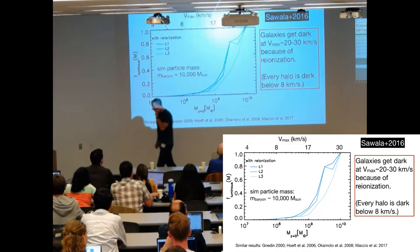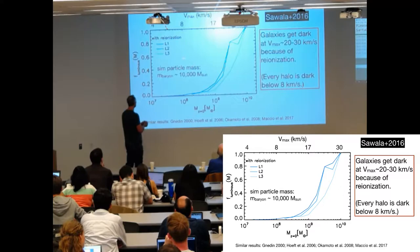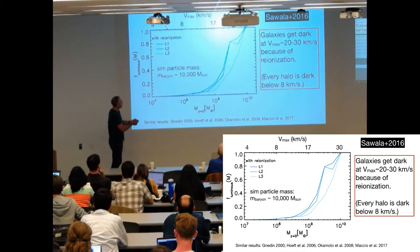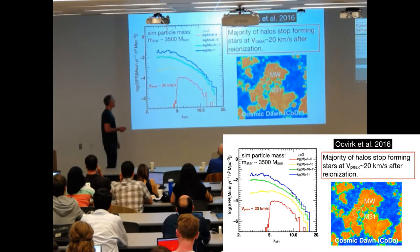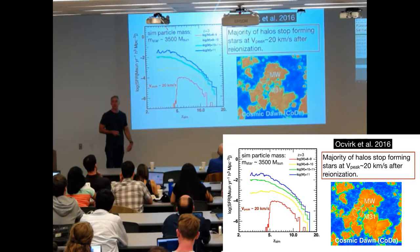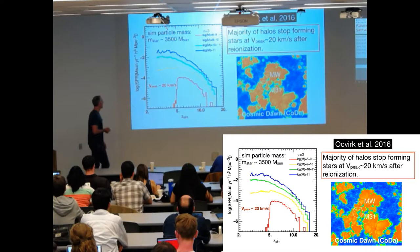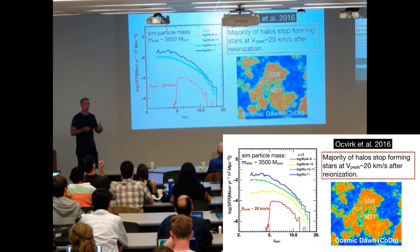People have continued to look at what reionization might do to quenching galaxy formation. This is an example of a kind of plot that people show. This is from Sawala et al., they're using zoom simulations with baryon particle masses of about 10,000 solar masses. And they're finding what's shown here is the fraction of halos that have any galaxy at all resolved. And you see that around 30 kilometers per second, things start getting dark. And around 20 kilometers per second, things are really starting to get dark, and they don't find anything in halos smaller than about 8 kilometers per second. And again, that's kind of what you would expect. This is similar to other stuff that's in the literature. Just to pick something else, this is from the CODA simulations. So these are the cosmic dawn simulations. These are regions that are selected to match the Milky Way and M31. They do full ray tracing. They're doing reionization self-consistently. And they find that the majority of halos with peak circular velocities of 20 kilometers per second stop forming stars after reionization. So again, this is sort of the same scale. Everybody's getting roughly the same answer.